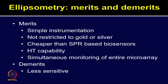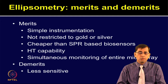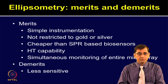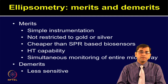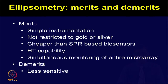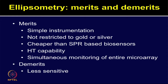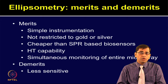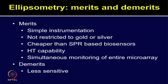Ellipsometry-based approaches have many merits. The instrumentation is very simple, unlike SPR-based instrumentation. It is not restricted to gold or silver surfaces. It is more economical than previously discussed SPR-based techniques, and it provides high throughput capability with simultaneous measurement of an entire microarray. The demerit of the approach is its sensitivity — it is less sensitive than SPR or SPR imaging-based techniques.